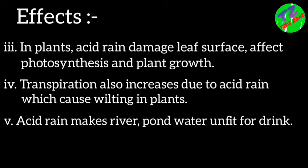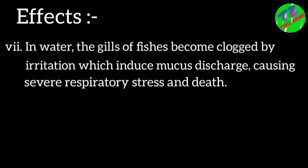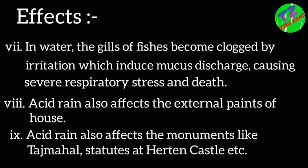Acid rain makes river and pond water unfit to drink. In seas and rivers, acid rain affects the growth and reproduction of fish and other aquatic animals. The gills of fish become clogged by irritation, which induces mucus discharge causing severe respiratory stress and even death of the species.